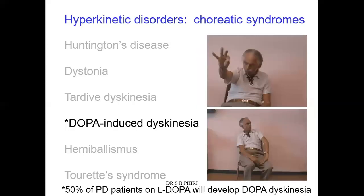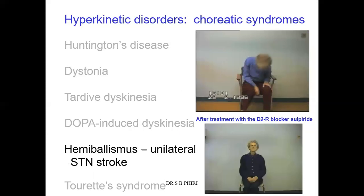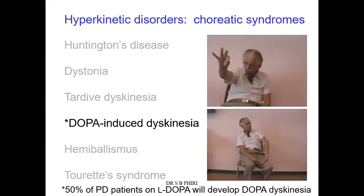Dopa-induced dyskinesia results from overusing the treatment for Parkinson's. If you use L-DOPA for a long period of time, it will result in dyskinesia because there will be so much dopamine, there will be excessive stimulation of the direct pathway and excessive movements, bringing about a hyperkinetic disorder — called dopa-induced dyskinesia because it results from the L-DOPA drug treatment for Parkinsonism.